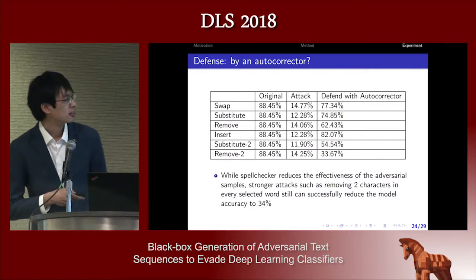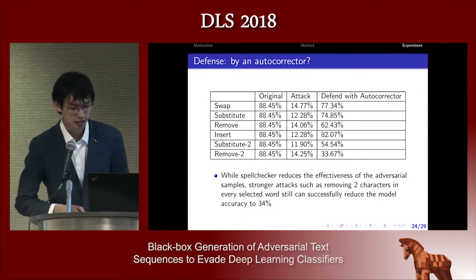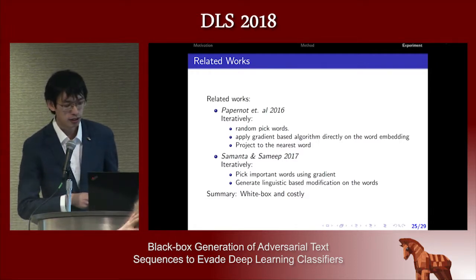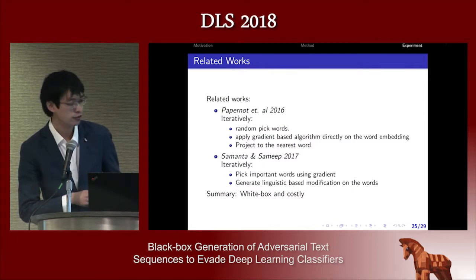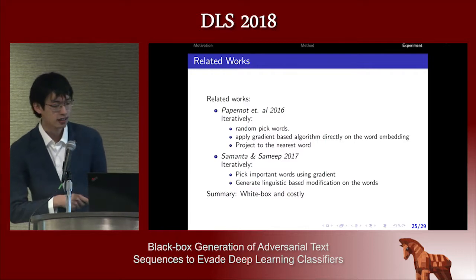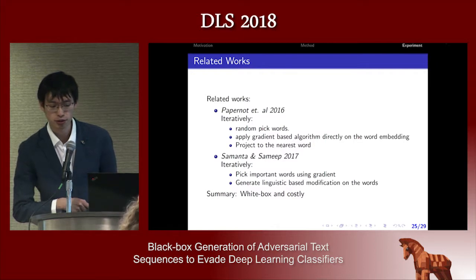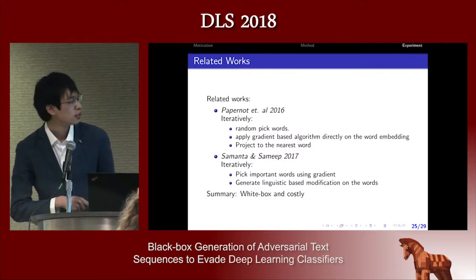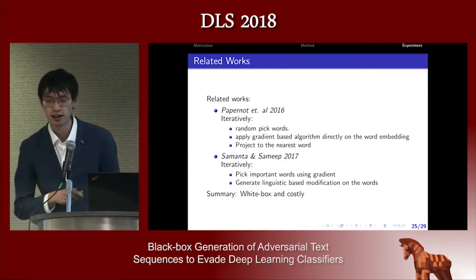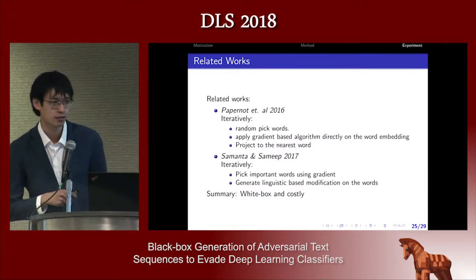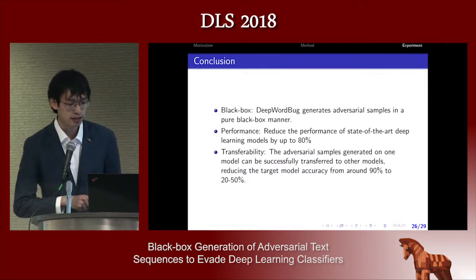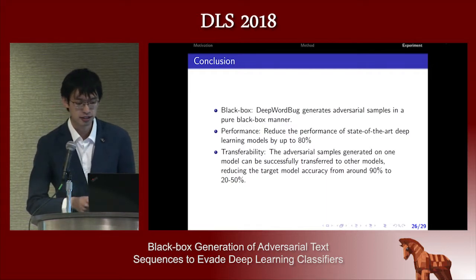We compare with two related works that use white box methods. The first randomly picks a word and applies a gradient-based algorithm directly on word embedding then does a projection. The second picks important words using gradient and generates linguistic-based modifications. Both methods use an iterative approach, while our method is a straightforward approach with no loop — so it's much faster. Our method is black box, achieves good performance, and the transferability is also good.